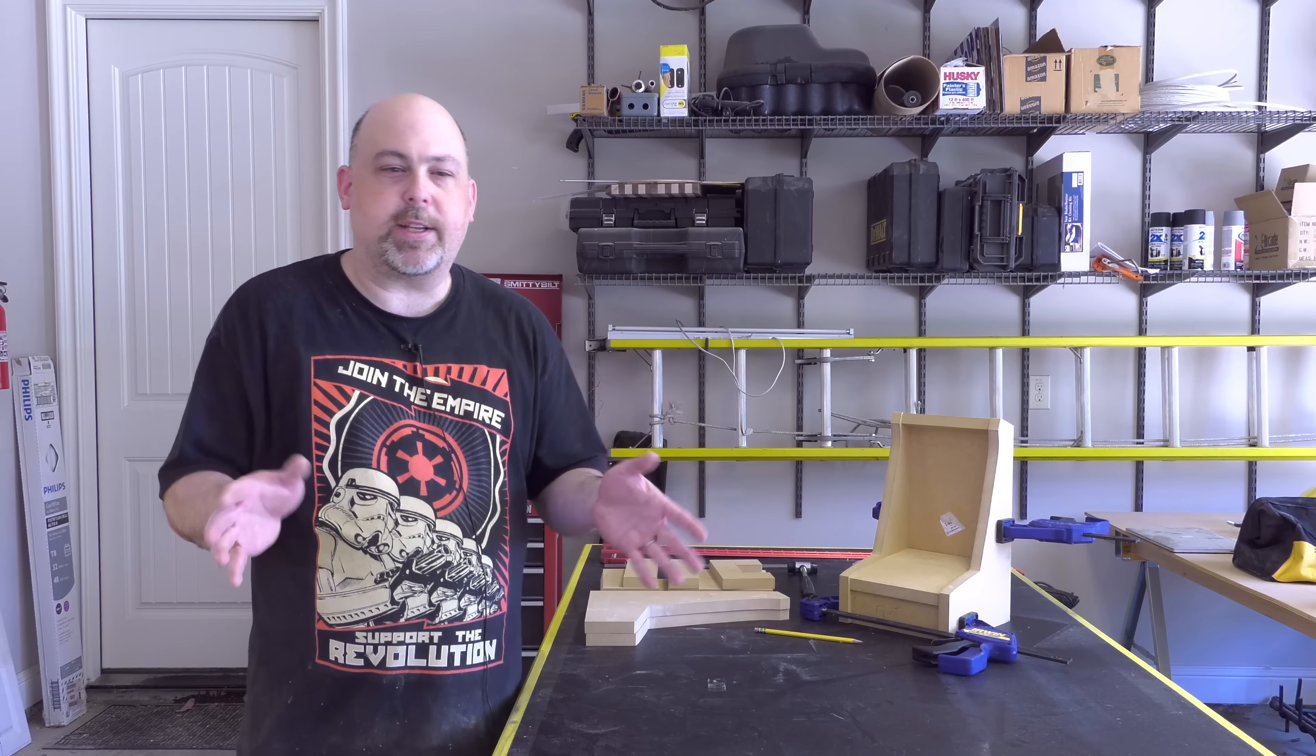I use my router table to make all of the slots for the T-molding. Generally on larger arcades, you would use a handheld router, but since this is so small, the router table made quick work of it. I use glue and brad nails to assemble my iPad arcade. If you don't have a brad nailer, you could just use glue and clamps. You could also just screw it together with wood screws. Brad nails are only there to hold it together while the glue dries. Brad nails alone are not strong enough.